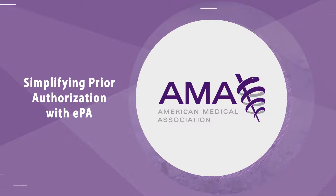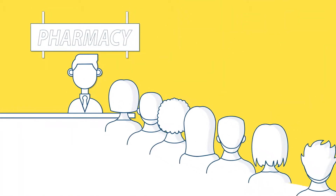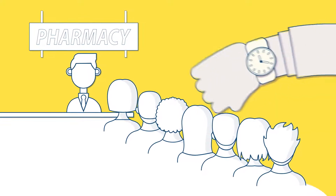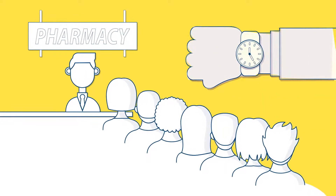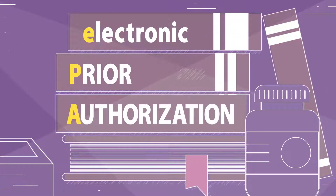As we discussed in Part 1, prior authorization can delay patient care and waste valuable time and resources. That's why the current manual process is a prime candidate for automation through electronic prior authorization, or EPA.